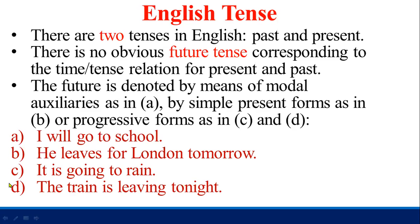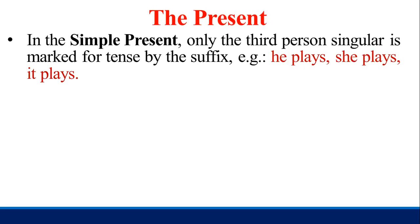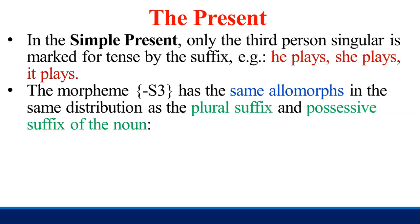Here you can see the four forms used to express the future, but it doesn't really just call the future tense — it is denoted by modal auxiliary, present forms, and progressive forms. For the present tense, in simple present, only the third person singular is marked for tense by suffix S or ES. The morpheme S has the same distribution as the plural suffix and possessive suffix of the noun.